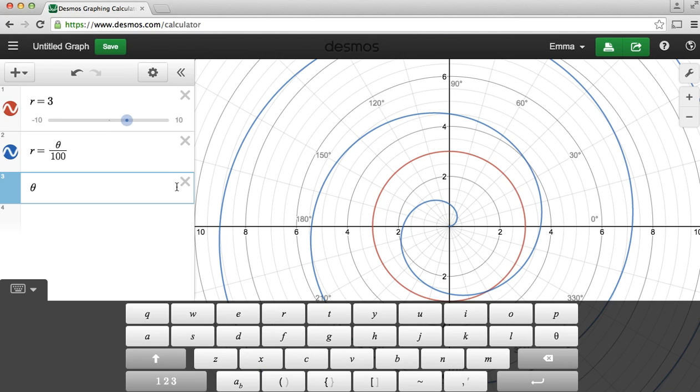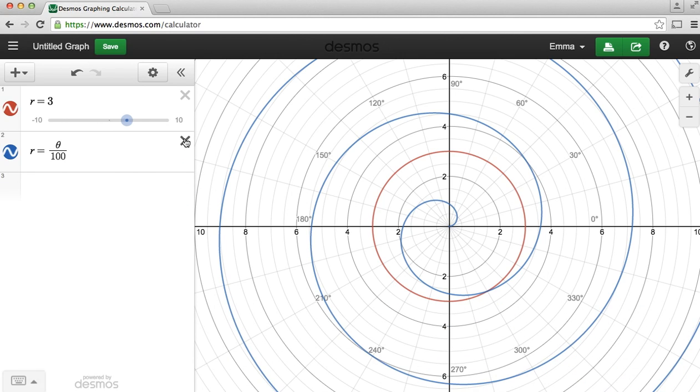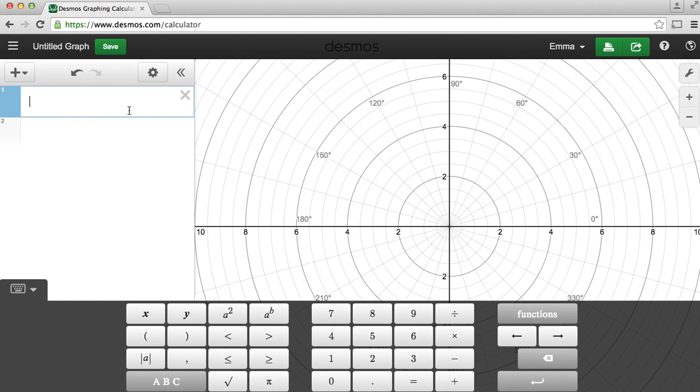Now let's make things a little bit more complicated. First let's delete our previous graphs, and let's graph the equation r equals 2 plus, oops, I'm going to add a parenthesis, 5 cosine theta.